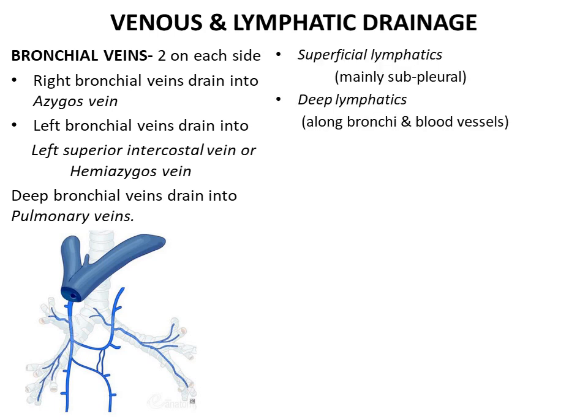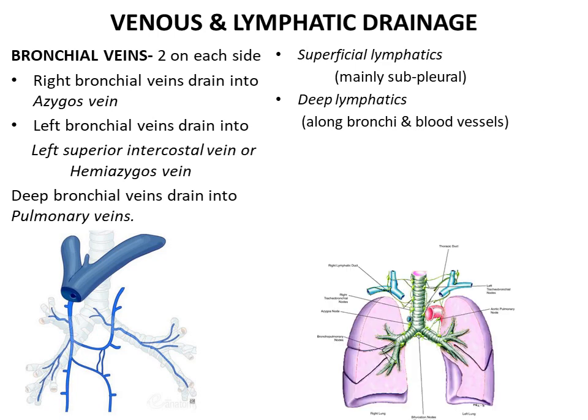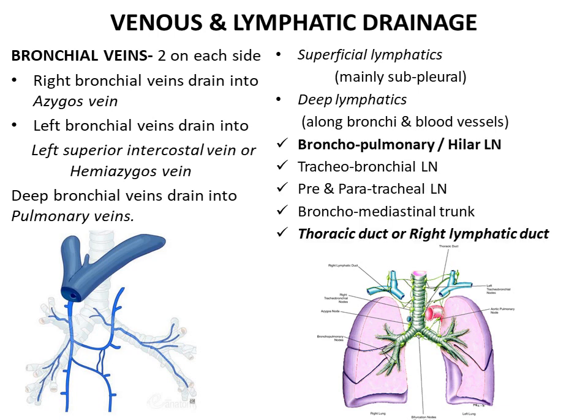The lymphatics can be divided into superficial lymphatics, which are mainly subpleural, and deep lymphatics which run along the bronchi and blood vessels. All lymphatics mainly run towards the hilum and drain into the main lymph node of the lung — the bronchopulmonary, also called the hilar lymph node. Lymph from here is drained through the tracheobronchial lymph nodes and the pre- and paratracheal lymph nodes to form the bronchomediastinal trunks, which drain into the right lymphatic duct or the thoracic duct.